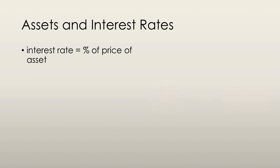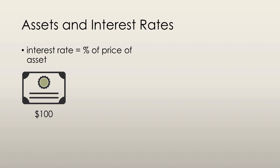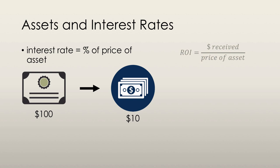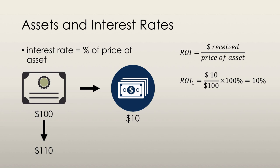Let's take a look at an example of calculating the interest rate. If I buy a bond worth $100 and I'm promised payments of $10 as interest, the interest rate is $10 divided by $100 multiplied by 100, which equals 10%. Now, if the value of my bond increases to $110, I'm still only receiving $10 — that dollar amount doesn't change. Using the same formula, the interest rate becomes $10 divided by $110 multiplied by 100, which gives us 9.1%. So the interest rate has gone down because the price of the bond went up.